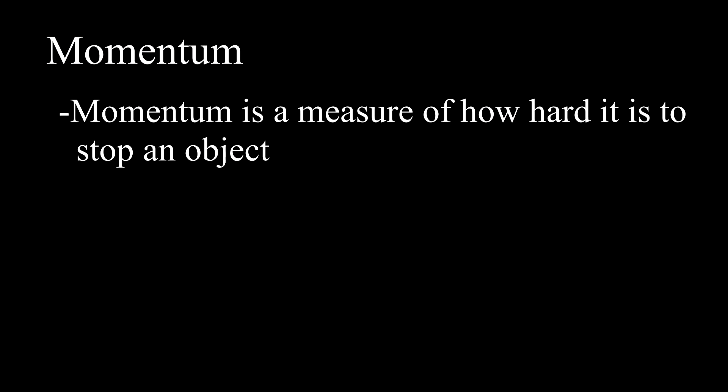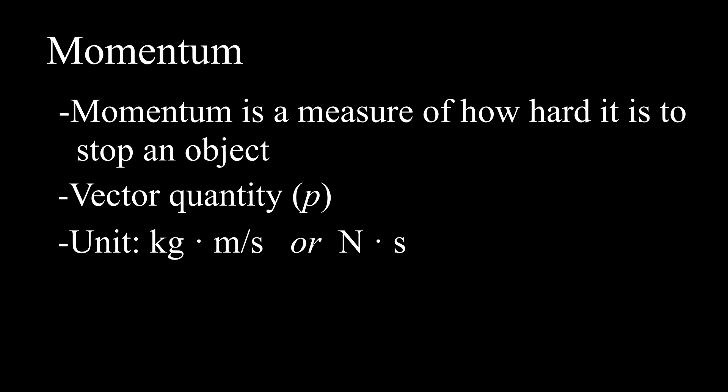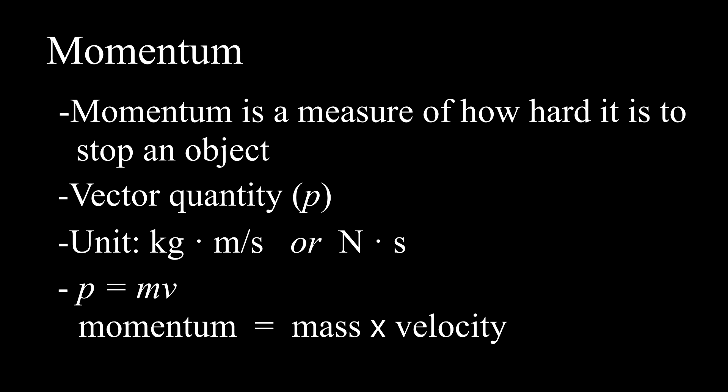Momentum is a measure of how hard it is to stop an object. Momentum is a vector quantity represented by the letter P. Momentum can be measured in kilogram meters per second or newton seconds. The equation for momentum is P equals mV, or momentum equals mass times velocity. Greater mass or greater speed yields greater momentum.